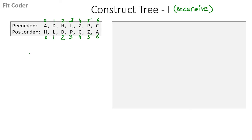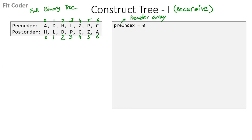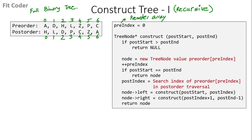Now let's see the pseudo code. We are given pre-order and post-order traversals and we have to construct a full binary tree. First, we create a variable pre-index initialized to 0, which is used to iterate the pre-order array. Then we have a construct function that takes two parameters: post-start and post-end, which are indices for the post-order traversal. The first call to construct will be with parameters 0 and 6, where 0 is the starting index and 6 is the last index.